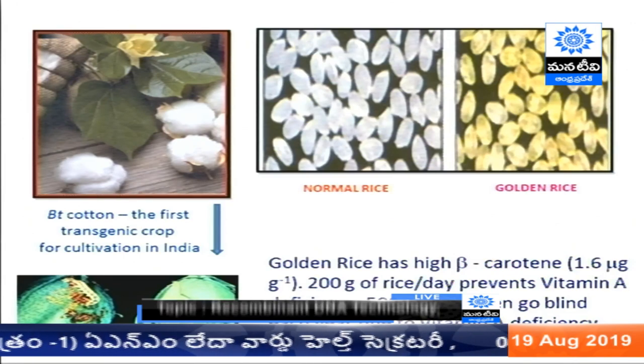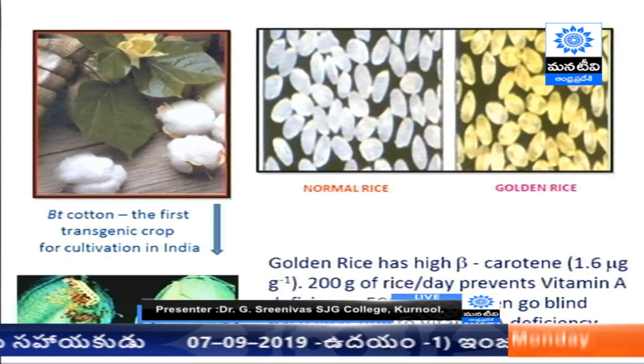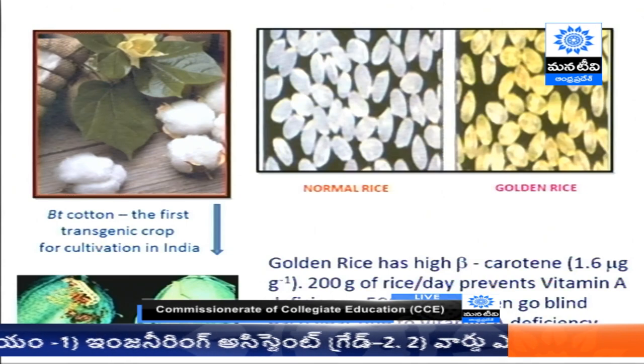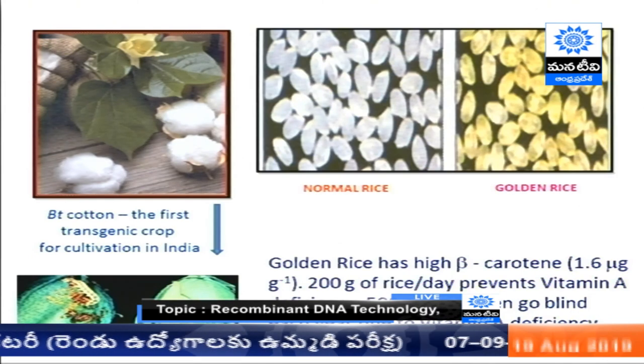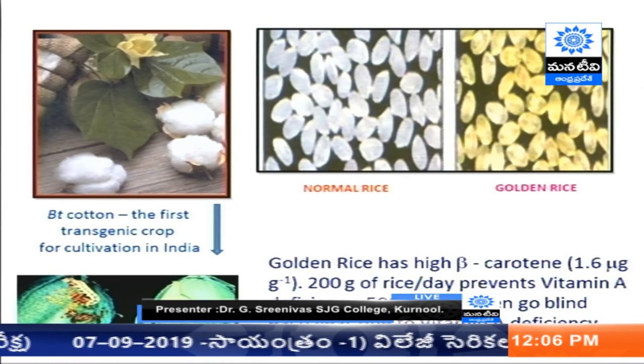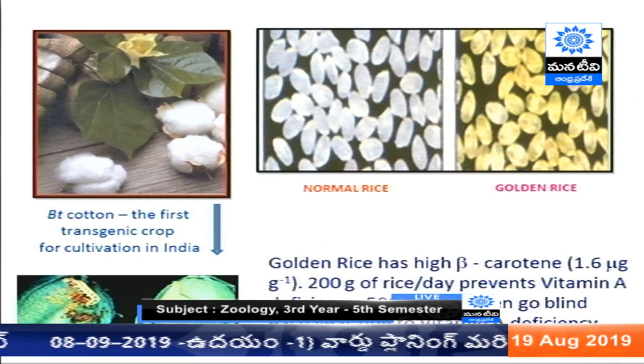In plants, through cloning we have produced BT cotton, which is a highly resistant transgenic plant with resistance over many insects. Another important example is golden rice — comparing with normal rice, golden rice has special characteristics: it contains beta-carotene and high vitamin A. This type of rice is produced by gene cloning technique, and gene cloning technology is widely used in plants.